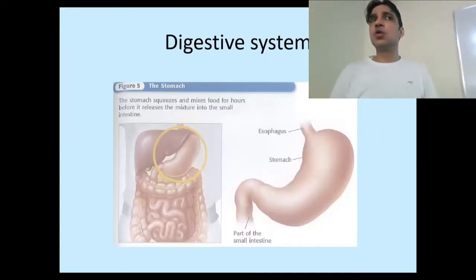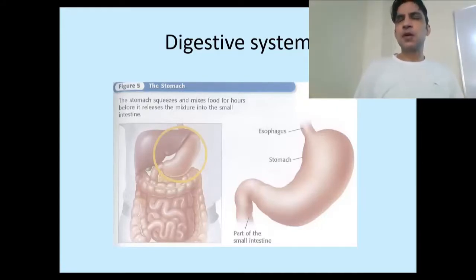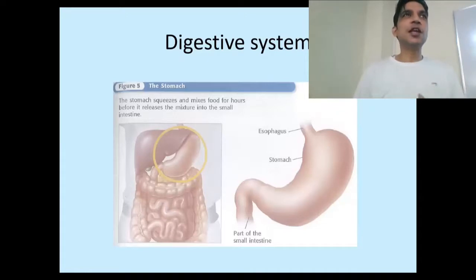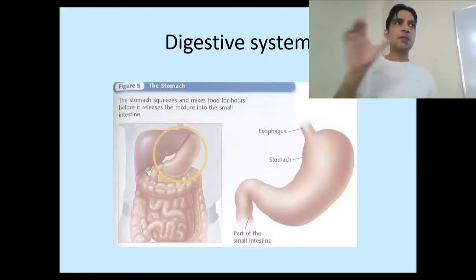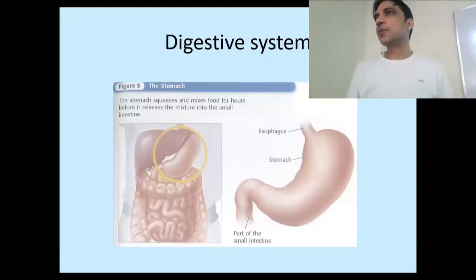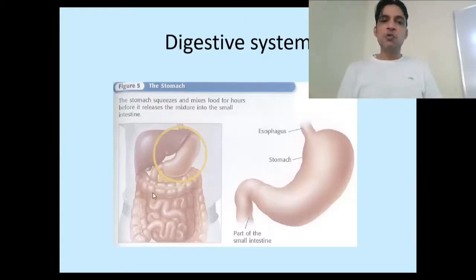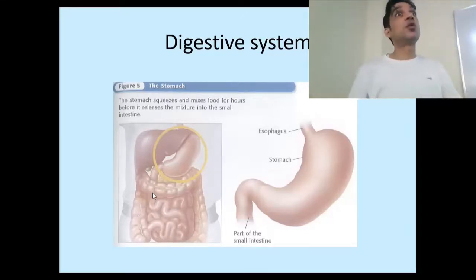The small intestine has three parts. You don't need to remember all the names, but they are the duodenum, and then the ileum. Just remember there are three segments or stages within the small intestine.